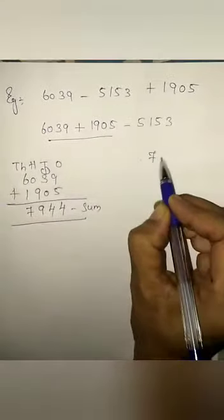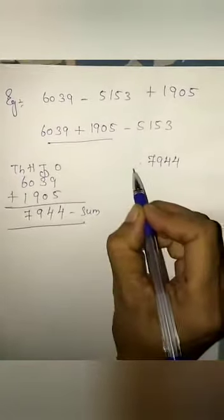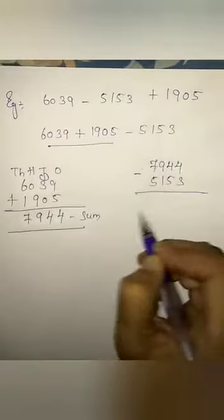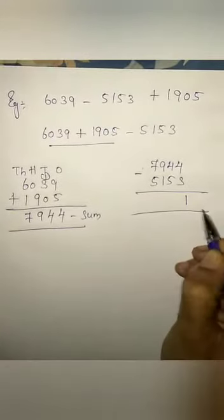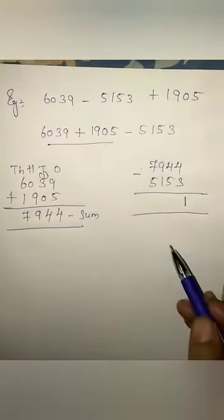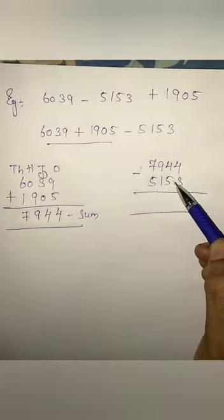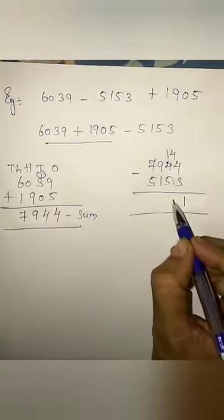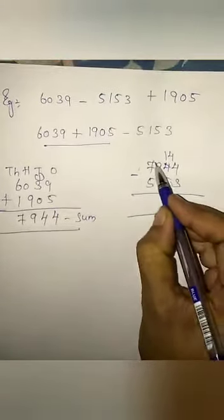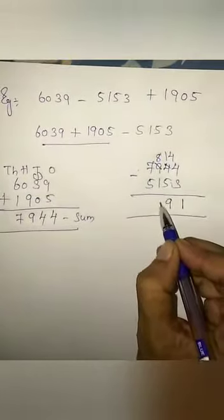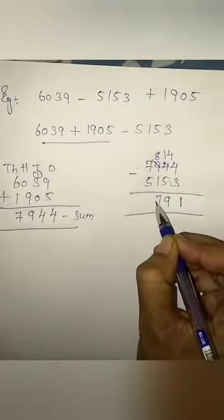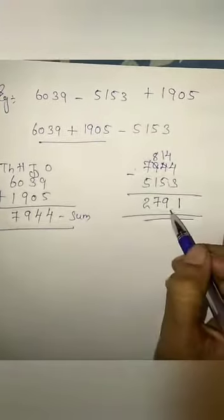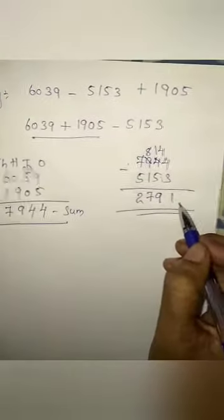Now write this sum: 7944 minus 5153. 4 minus 3 is 1. We cannot subtract 5 from 4, so borrow 1 from here. Now 14 minus 5 is 9. After borrowing, 8 is left. 8 minus 1 is 7. Then 7 minus 5 is 2. The final answer is 2791.